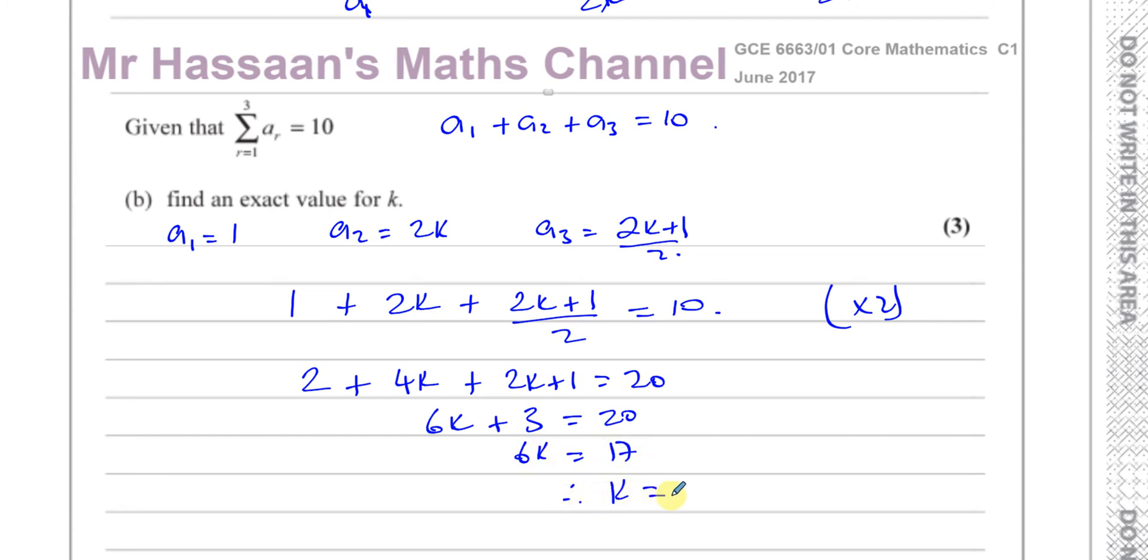So 6k equals 20 minus 3 which is 17, so therefore k is equal to 17 over 6. So this is the answer, let's find the exact value for k which is 17 over 6.